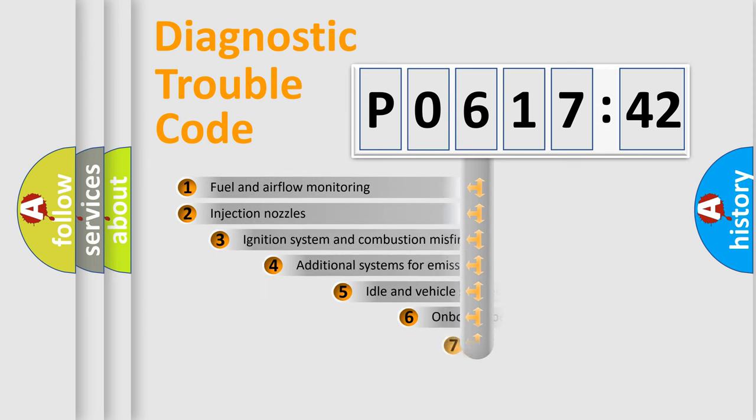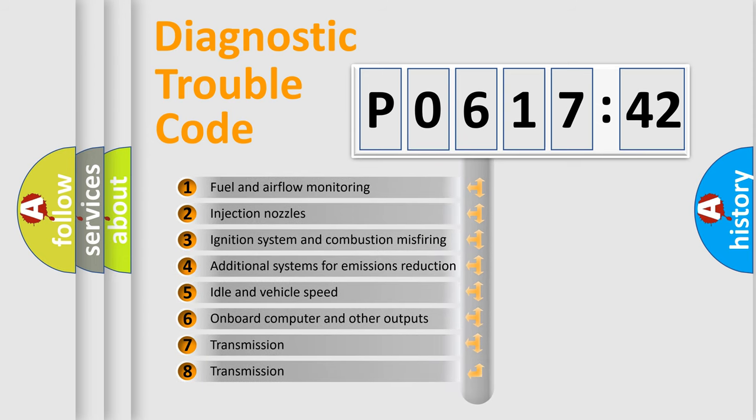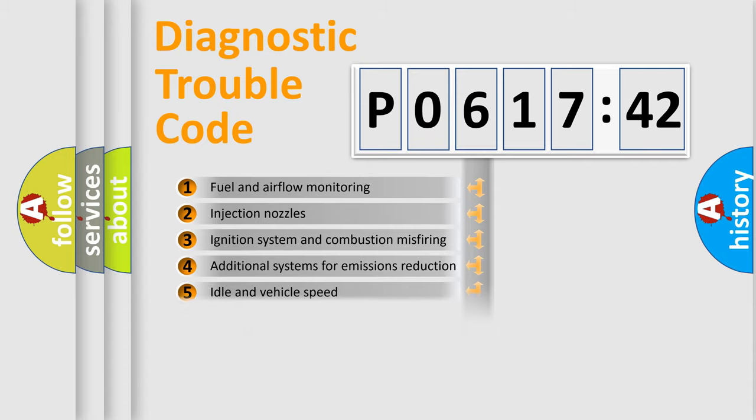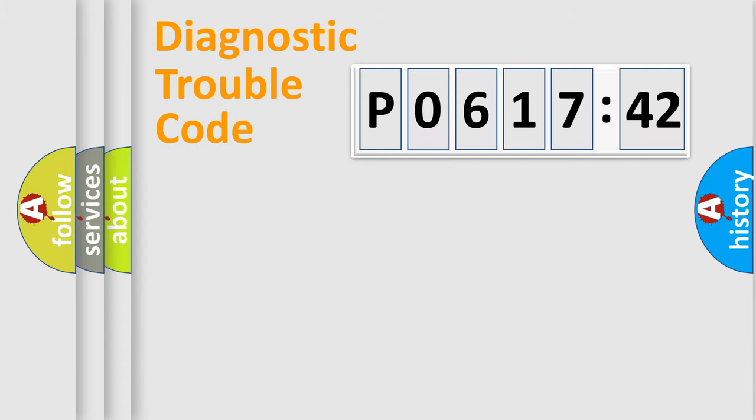The add-on to the error code serves to specify the status in more detail, for example, a short to the ground. Let's not forget that such a division is valid only if the second character code is expressed by the number zero.